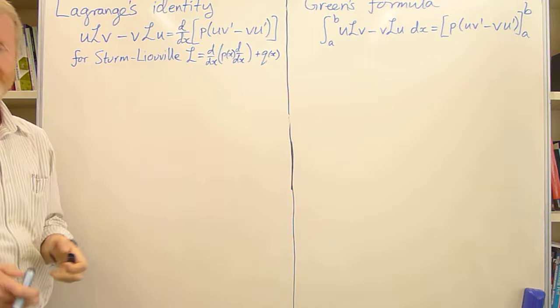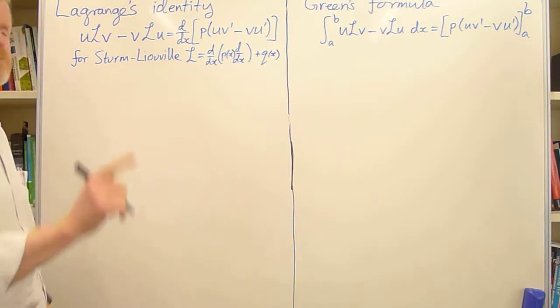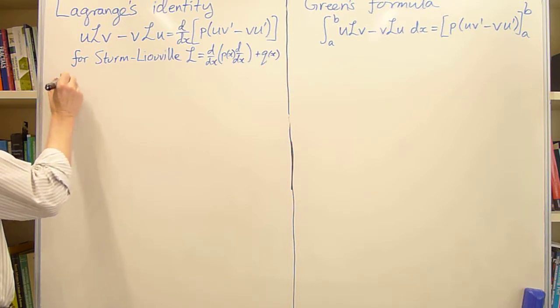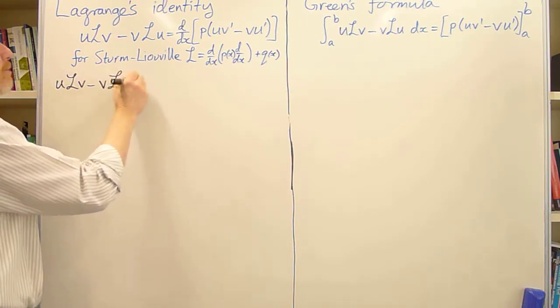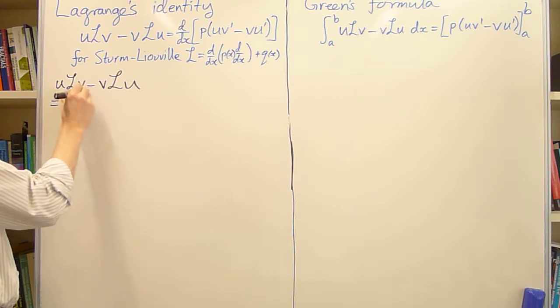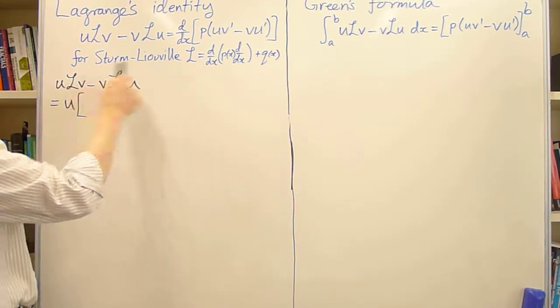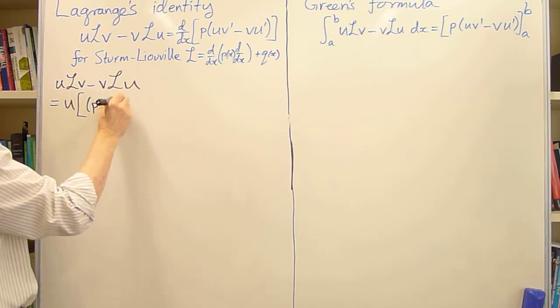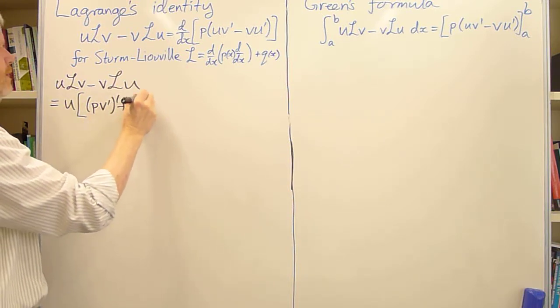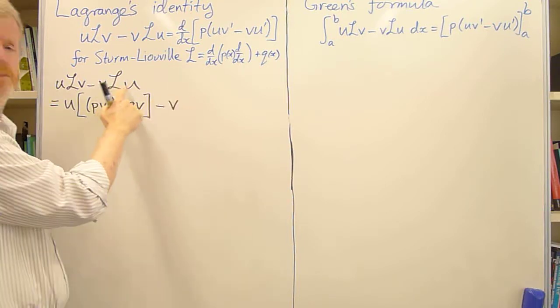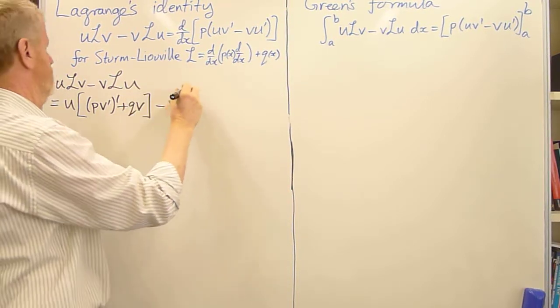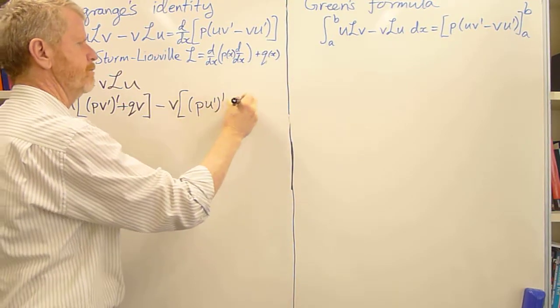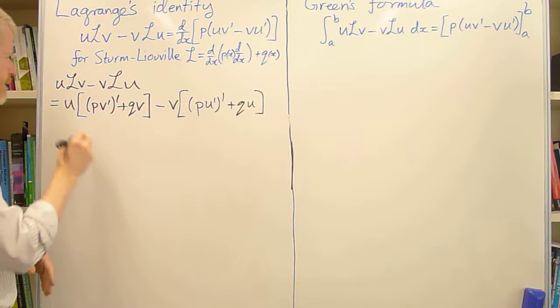So it's just a matter of substitution and rearrangement with one trick in the middle. So the left hand side uLv minus vLu is u times L applied to v. So that's pv'' plus qv minus v times L applied to u. So that's pu'' plus qu. Now expand this.